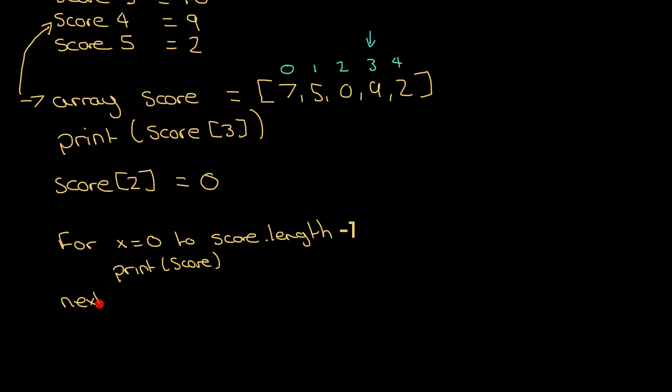Next x. That will first print score, and then in the square brackets I'm going to put x because that's going to change each time around the for loop. Next x. First time on the loop, that's going to pull out the number seven because x is going to be zero, so score zero. Then I'll get the number five, then I'll get the number zero, then I'll get the number nine, then I'll get number two.